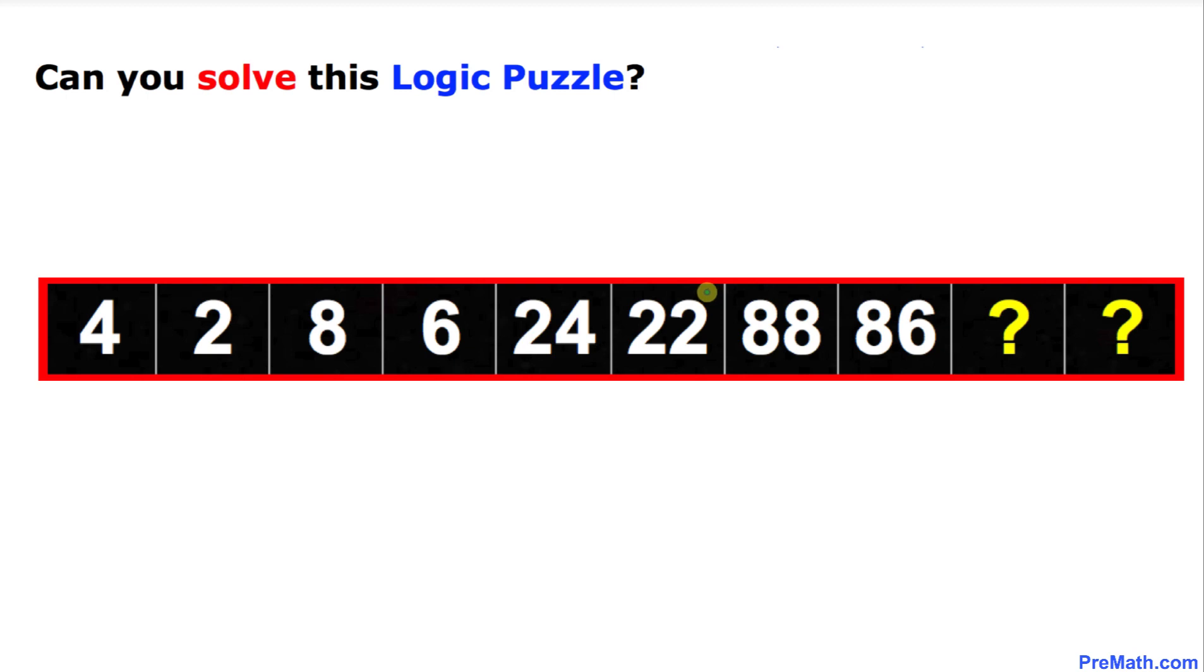Welcome to pre-math. In this video tutorial we are going to solve this given number series puzzle. As you can see, we got numbers 4, 2, 8, 6, 24, 22, 88, and 86. Now the question mark is what numbers are going to be at these two places. Can you figure out the answer to this puzzle on your own?